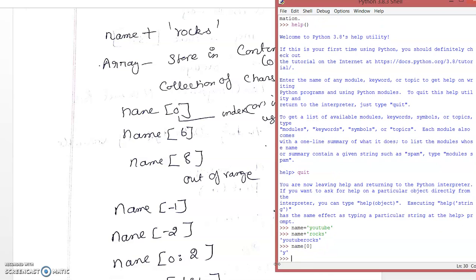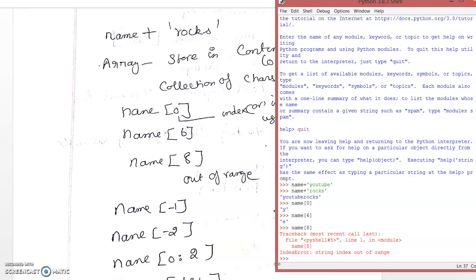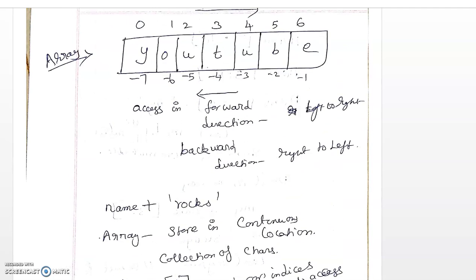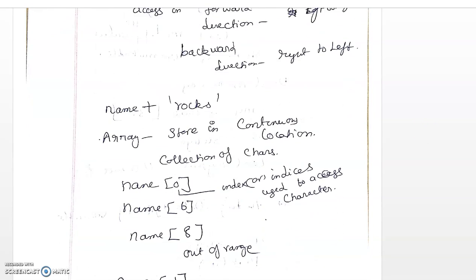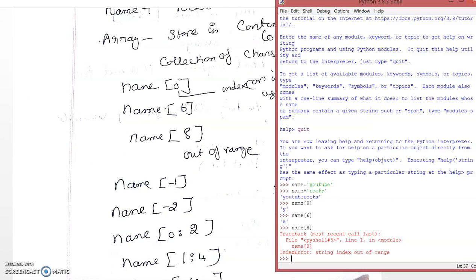name[6] will give the last character. name[8] won't return anything because the string contains only indices 0 to 6 — the length is 7 characters, starting from 0 to 6. So it can't print index 8; it will give an 'index out of range' message.